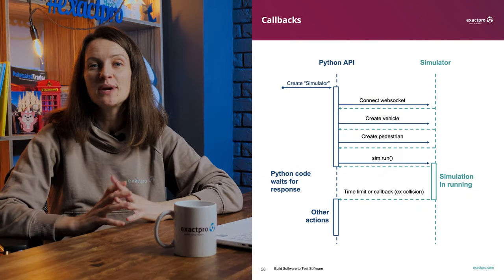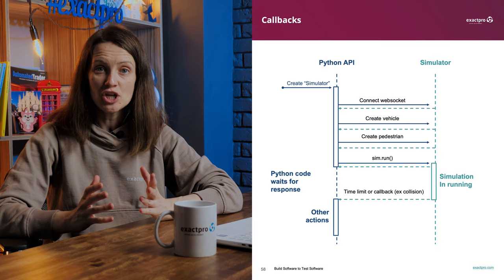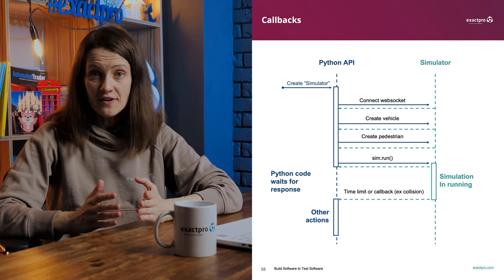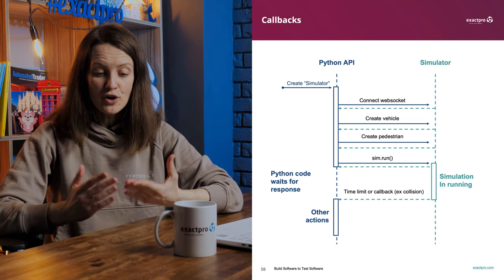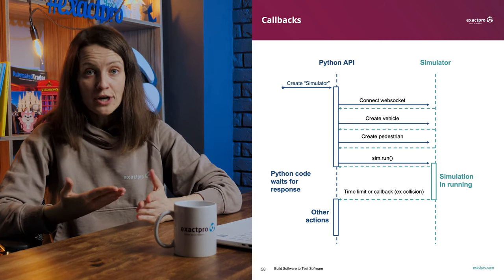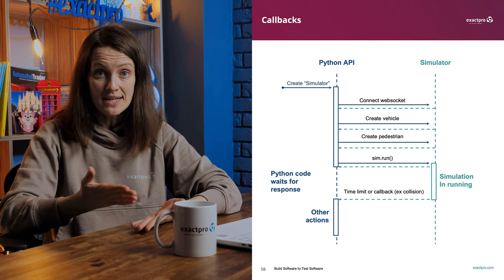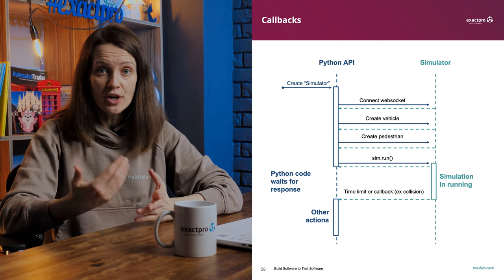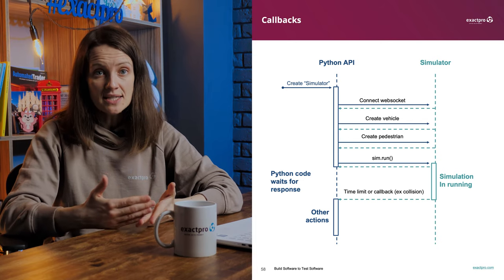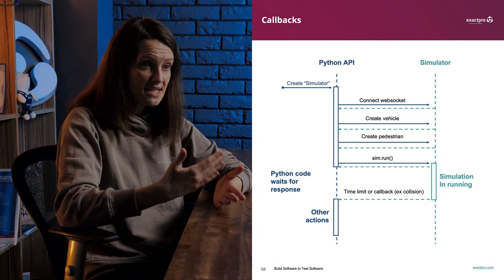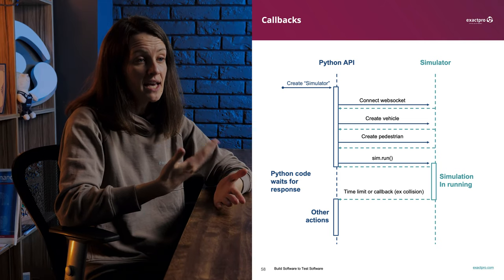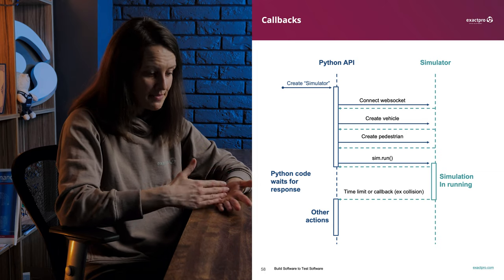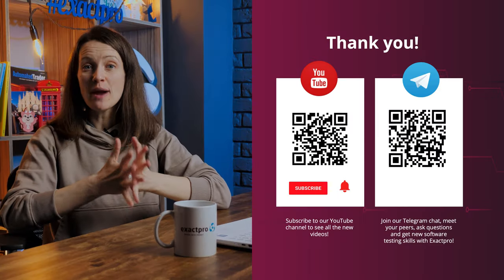The last topic is callbacks. You might get the impression that all APIs work in a query-response mode, but that's not true. Very often the system can send several responses. For example, if you send an order to buy 100 stocks, the answer may come at once if aggressively priced, or it may arrive gradually while your order awaits and people steadily sell your stocks until fulfilled. Similarly, the Python API of the LGSVL simulator responds to your requests but can also trigger a callback if something like a collision happens.